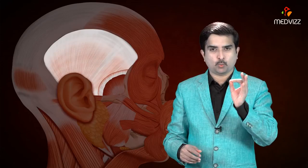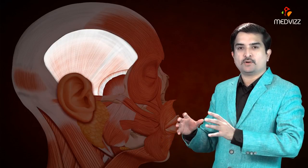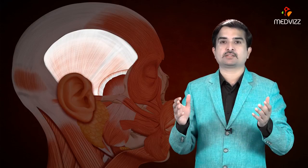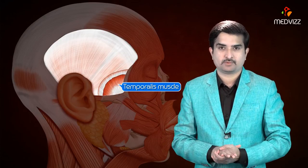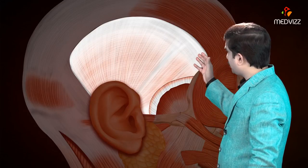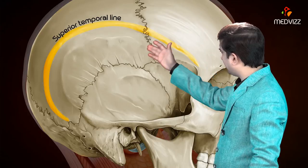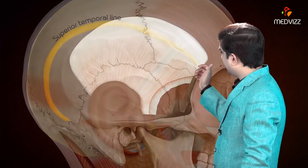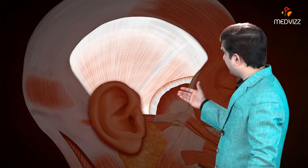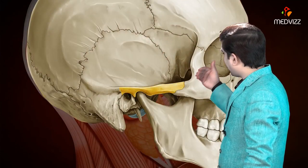The temporal fascia is a very thick aponeurotic sheet that roofs over the temporal fossa and covers the temporalis muscle. As you can see in this picture, superiorly the fascia is a single layer and attached to the superior temporal line, but inferiorly the fascia splits into two layers.